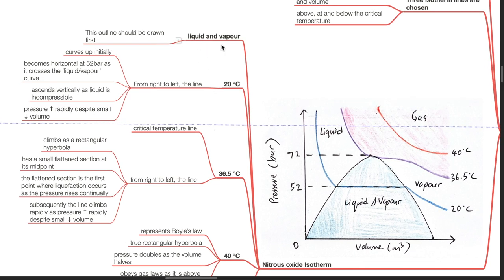Liquid and vapour: This outline should be drawn first. A line representing temperature at 20 degrees Celsius from right to left. The line curves up initially, becomes horizontal at 52 bar as it crosses the liquid vapour curve. It ascends vertically as liquid is incompressible. Pressure increases rapidly despite a small increase in volume.